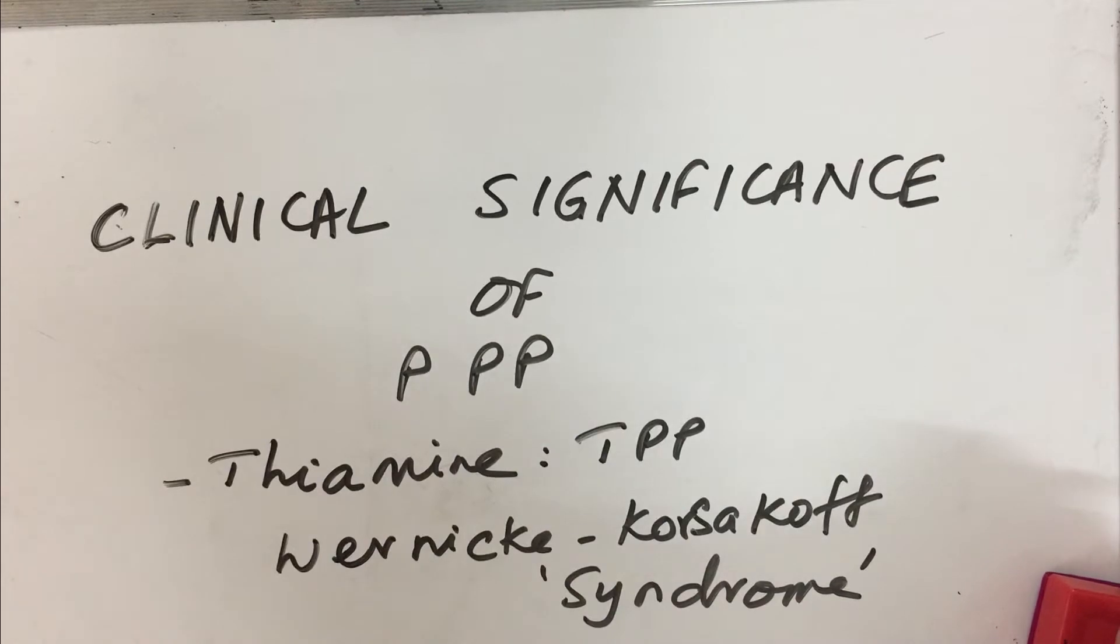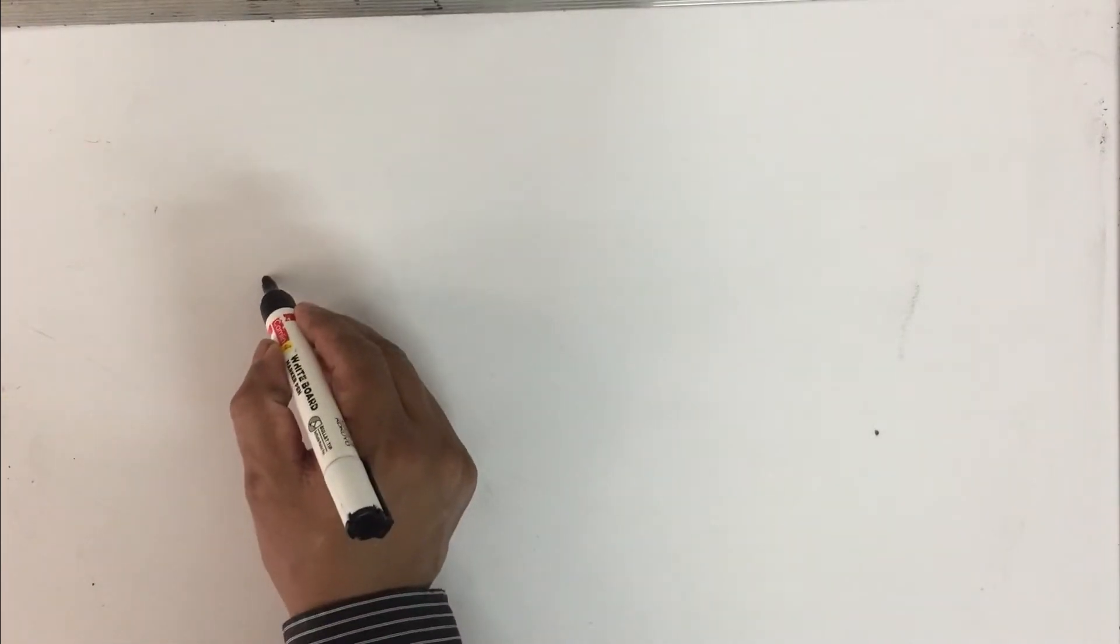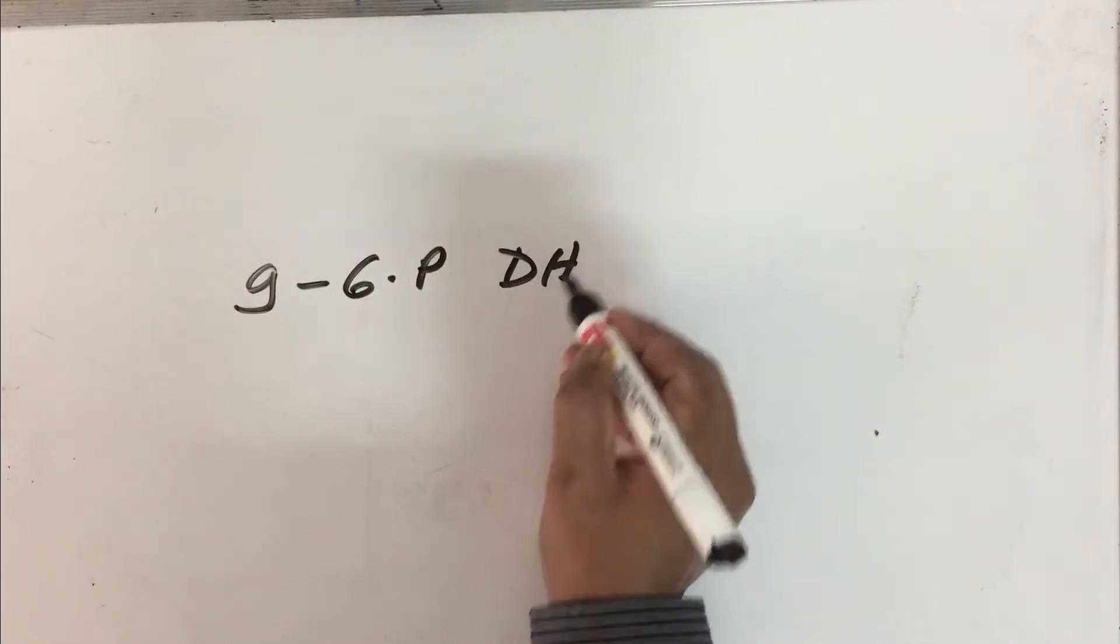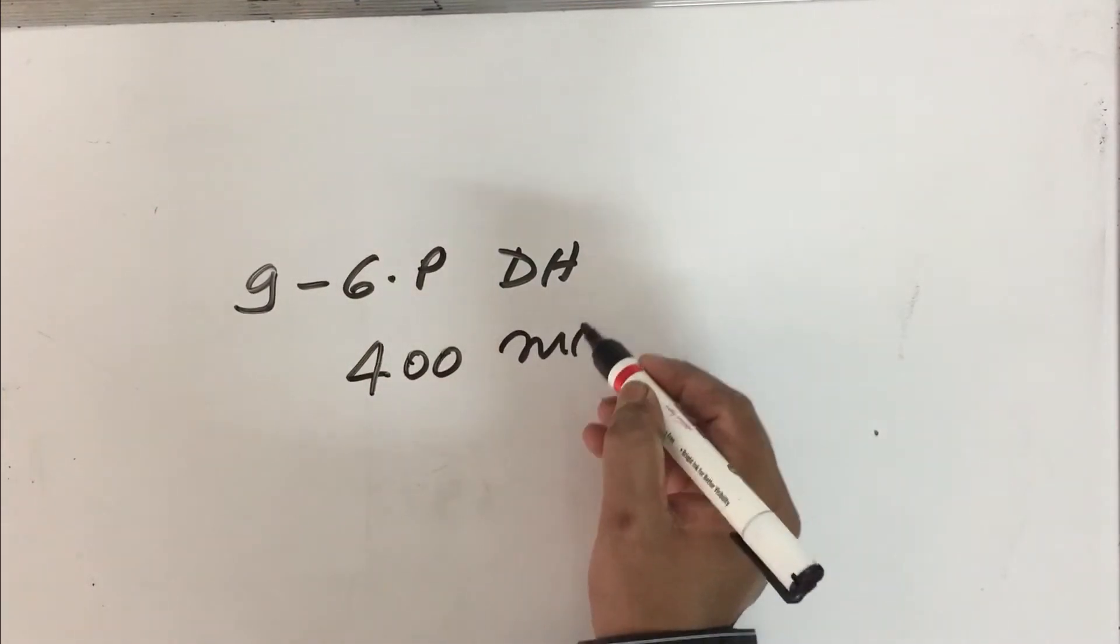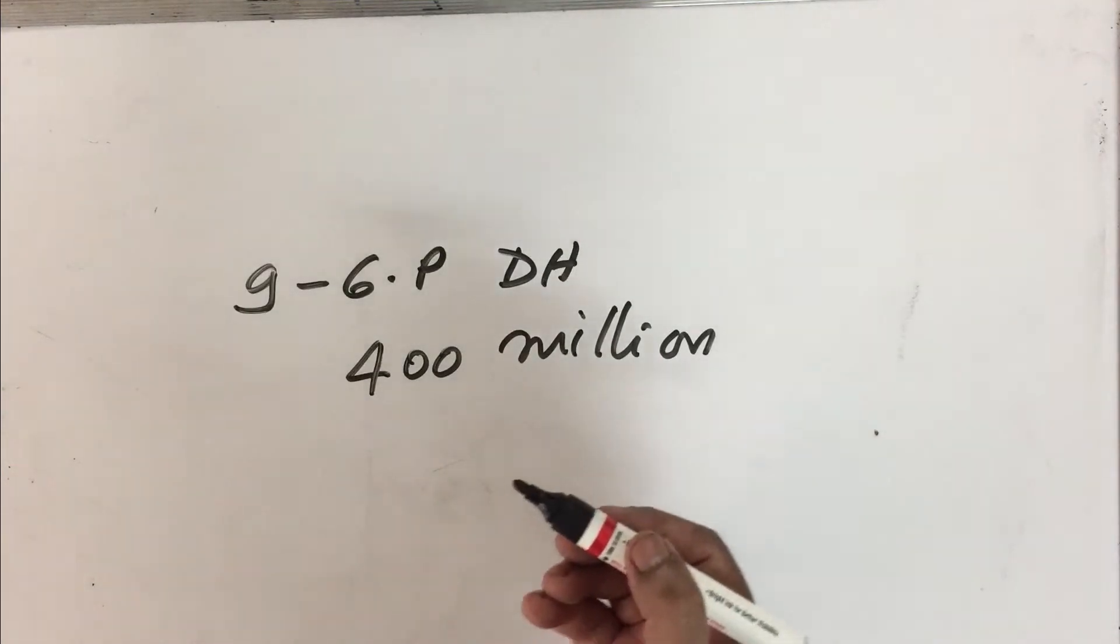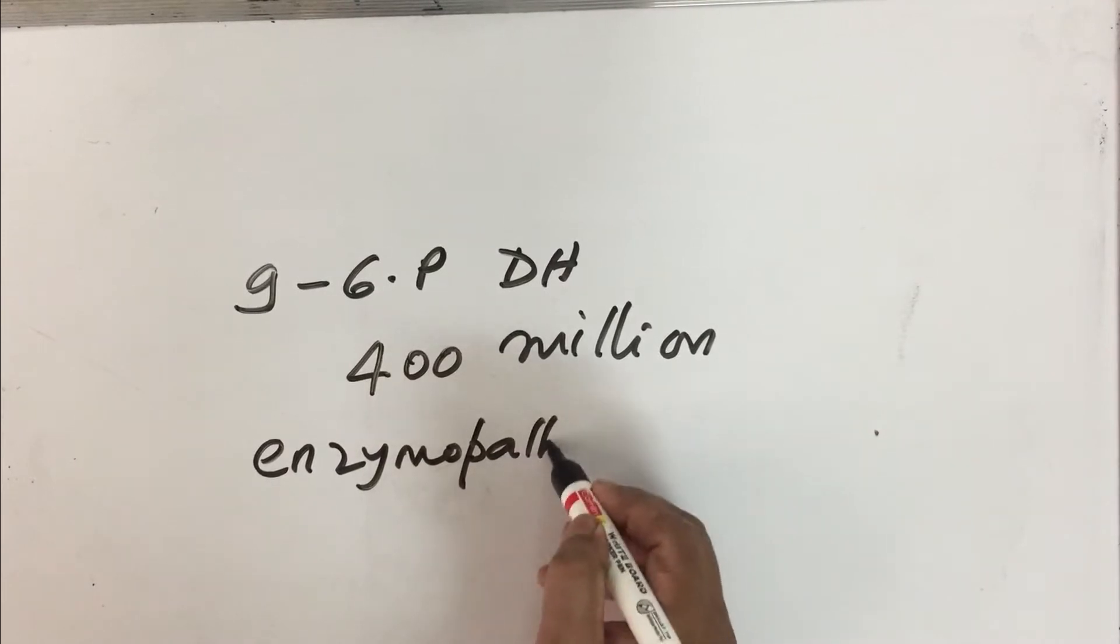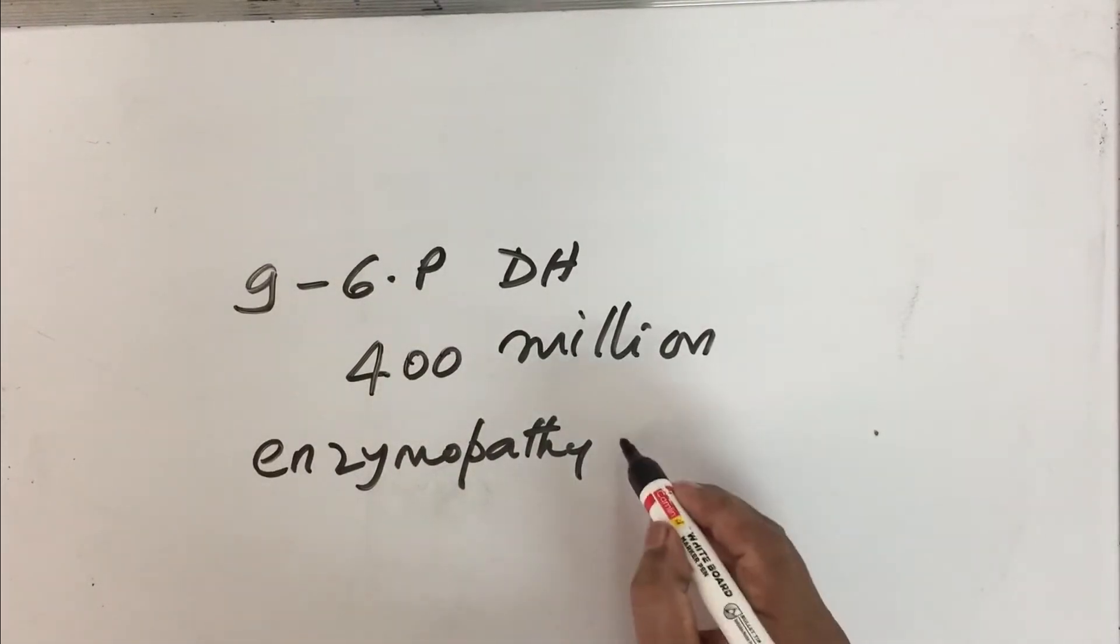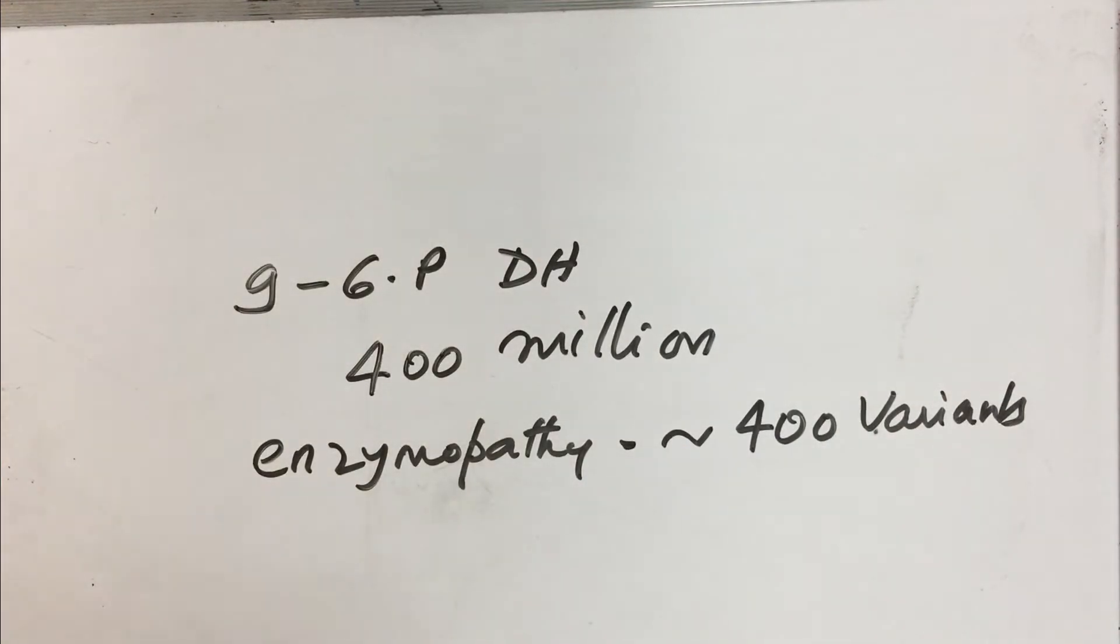The second clinical significance of PPP is genetical, mainly because of the deficiency of an enzyme, the first enzyme which catalyzed this reaction, that is glucose-6-phosphate dehydrogenase. About 400 million people are deficient in this particular enzyme, and this is considered to be the biggest human enzyme-opathy in the world.